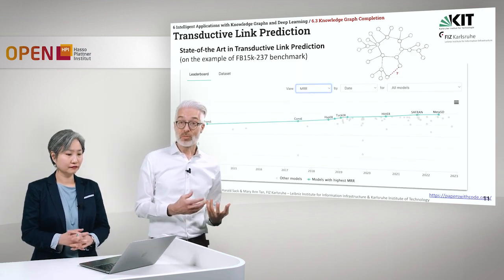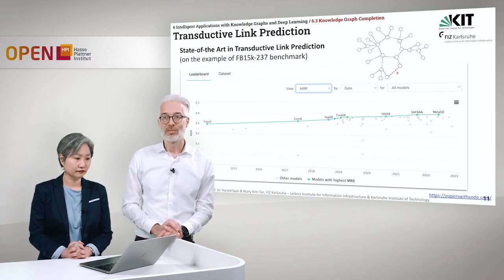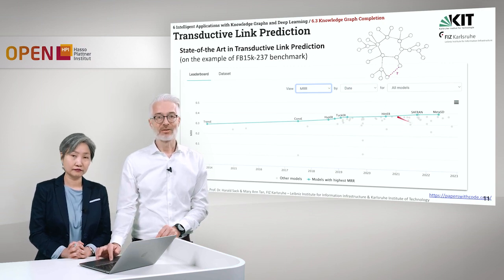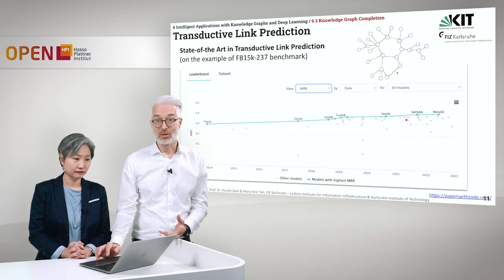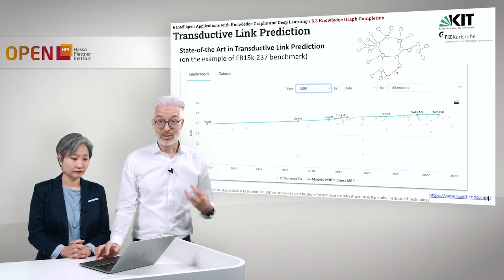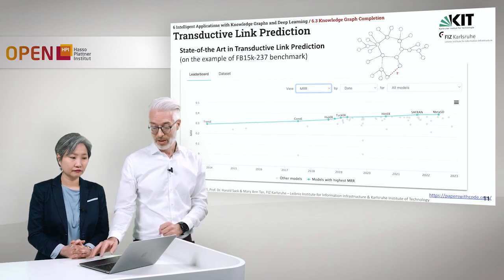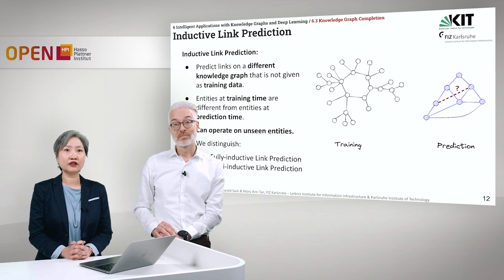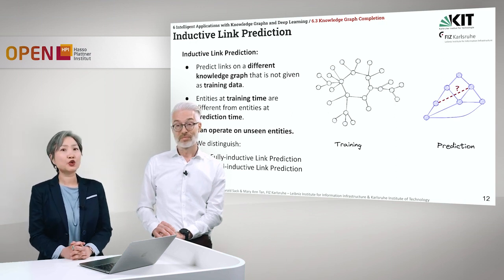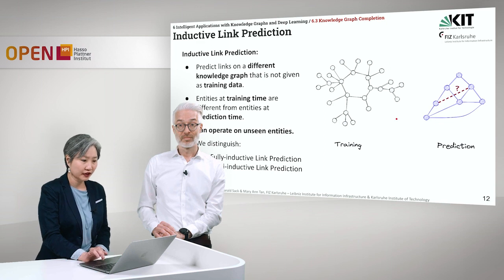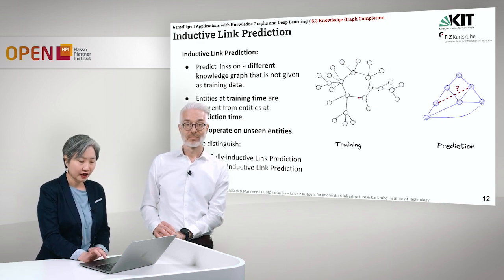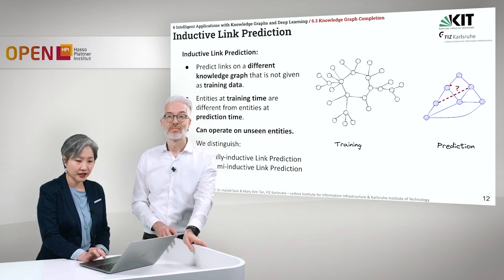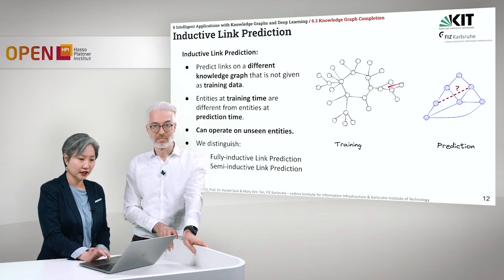In transductive link prediction, the state-of-the-art models haven't made much progress recently — they are quite good, but there has not been much further progress. Therefore another task emerged: inductive link prediction, which tries to deploy the power of knowledge graph embeddings in a better way. In inductive link prediction, the entities trained are not the same as the entities we are trying to predict, which means we can operate on unseen entities.